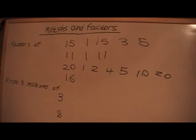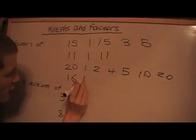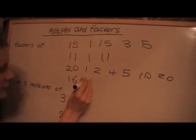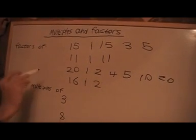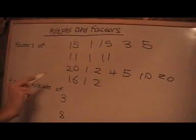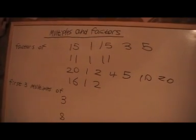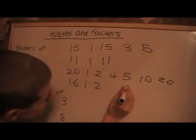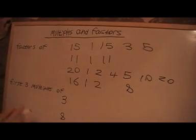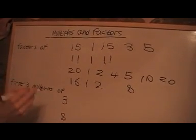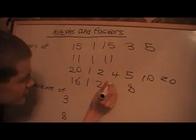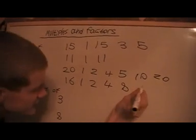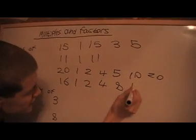Factors of 16: 1 is a factor. 2 is a factor, because 16 divided by 2 is 8, so that means 8 is also going to be a factor. 4 is a factor, and obviously the number itself is always a factor.